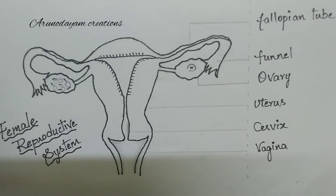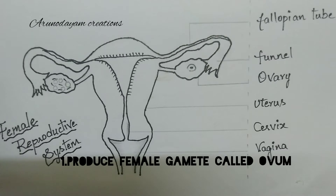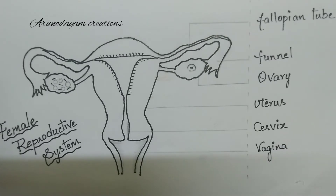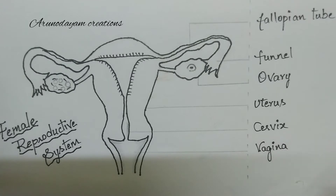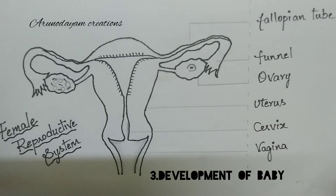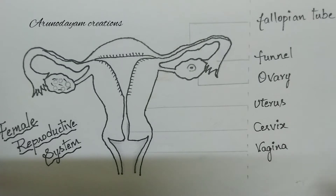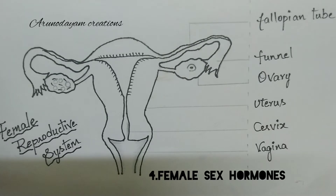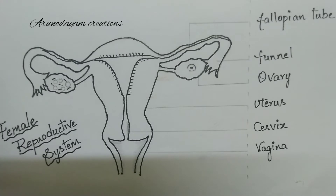The first function of the female reproductive system is to produce female gametes — that means ova or ovum. It is also useful for fertilization, for development of the baby, and for production of female hormones like estrogen and progesterone.